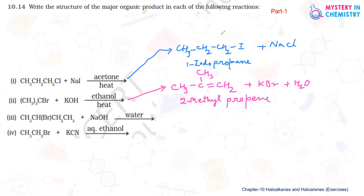Now come to third one. Tertiary bromide is given and it is reacting with NaOH in presence of water, that means aqueous NaOH. And by this reaction, hydrolysis is taking place. That means Br is replaced by OH group.